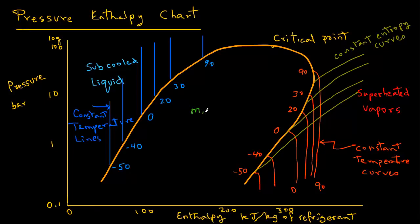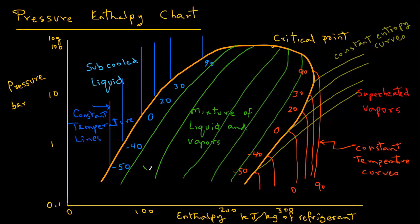Inside the bell-shaped curve any point represents a mixture of liquid and vapors. And we draw these lines within this region inside the bell-shaped curve. And we are going to label them as quality.